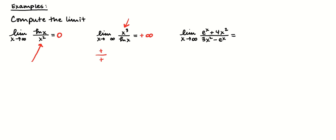As x approaches infinity with a mix of exponential and algebraic: I see e to the x in the numerator, which is stronger than 4x squared, and negative e to the x in the denominator. Since they're essentially the same — both e to the x — I divide the leading coefficients. The numerator has coefficient 1 and the denominator has coefficient negative 1, so that limit equals negative 1.